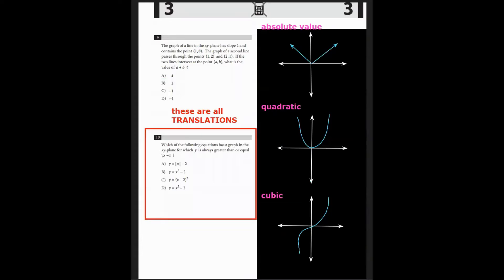Question 10. Which of the following equations has a graph in the xy plane for which y is always greater than or equal to negative one? Well, they don't give us the ability to use the graphing calculator, as you can see in the top of the page icon. However, we do know that choice a is an absolute value equation.